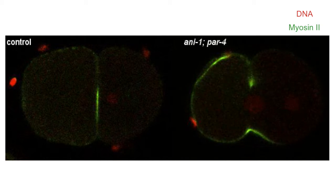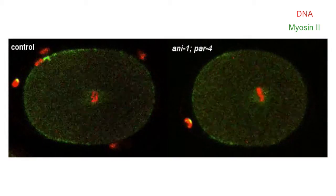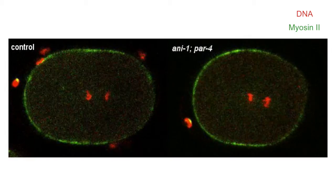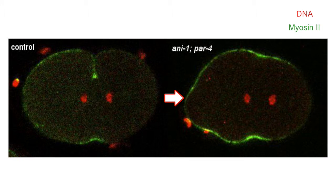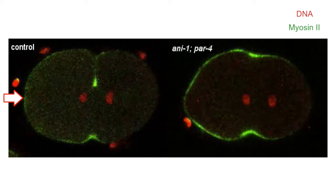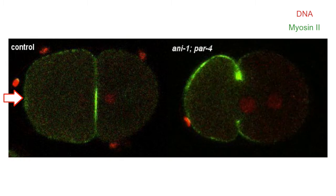The anilin 1 and PIG1 pathways are important to keep the furrow close to the spindle mid-zone. Pakle et al noticed that active myosin 2 accumulated at the anterior cortex of anilin 1 PAR4 mutants during cytokinesis whereas in wild-type embryos myosin is removed from the anterior cortex after anaphase onset.